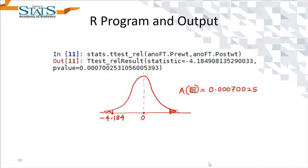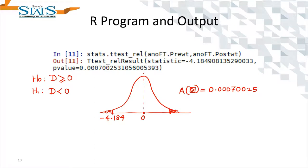Let us see how we consider this p-value. We need to understand that with the given test statistic, the p-value from ttest_rel is a two-tailed p-value, representing the area under the curve in both tails. In our problem, however, it is a one-tailed problem with H1 as d less than 0.